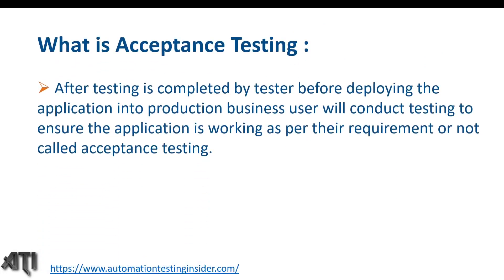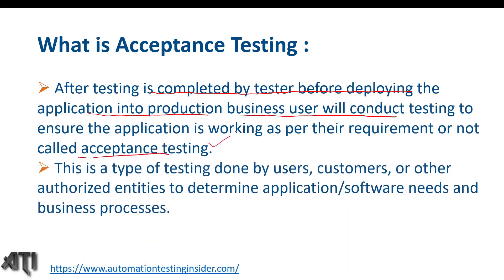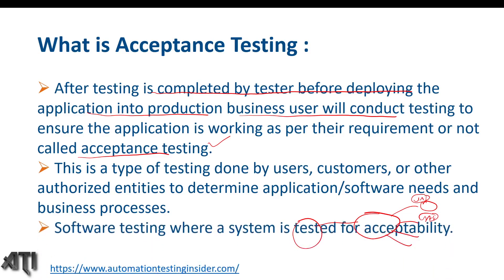After testing is completed by the tester and before deploying to production, the business user conducts testing to ensure the application works as per their requirement — this is acceptance testing. It is done by users, customers, or other authorized entities to determine whether the application meets business needs. The goal is to evaluate whether to accept the software or not.